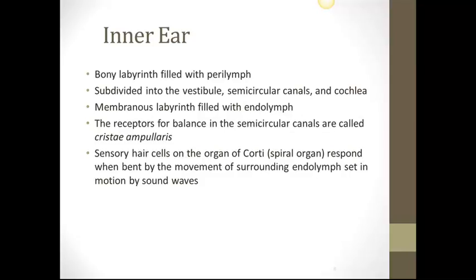The inner ear consists of the bony labyrinth filled with perilymph. It is subdivided into the vestibule, semicircular canals, and cochlea. The membranous labyrinth is filled with endolymph. The receptors for balance are in the semicircular canals and are called the cristae ampullaris. Sensory hair cells on the organ of Corti, also known as the organ of hearing — a spiral-type organ in the inner ear — respond when bent by movement of surrounding endolymph set in motion by sound waves passing through the tympanic membrane, the ossicles, and through the oval window.